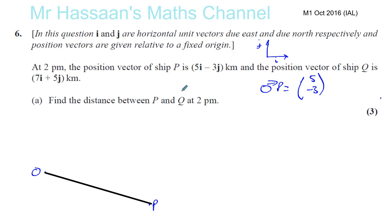It says the position vector of Q at the same time, 2pm, is 7i plus 5j. Something like, it's not exactly accurate, but you know, a general idea. You don't even have to sketch it to be honest. So this is OP, this is OQ. This is just for you so you can understand everything properly.